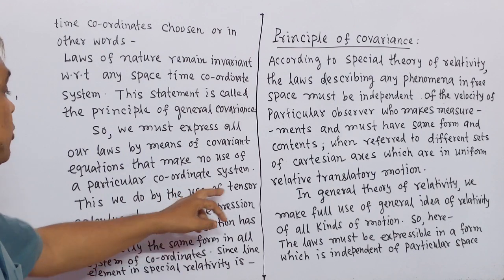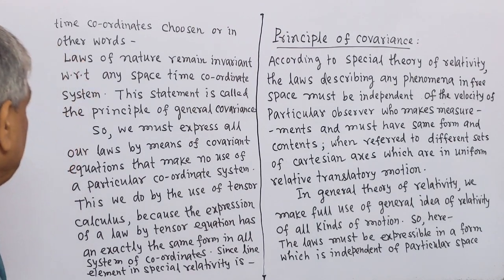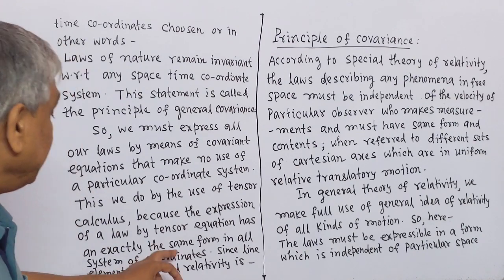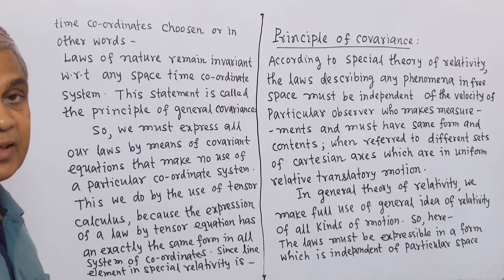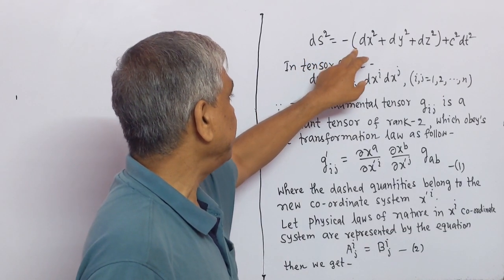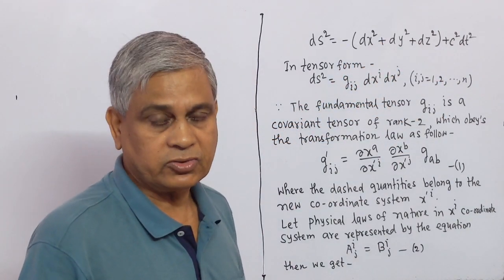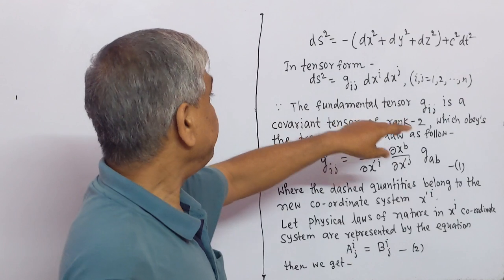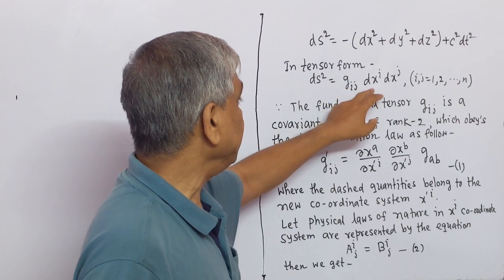This we do by the use of tensor calculus, because the expression of a law by a tensor equation has exactly the same form in all systems of coordinates. The line element in special relativity is ds² = −(dx² + dy² + dz²) + c²dt², where c is the velocity of light. In tensor form, the line element is expressed as ds² = gij dxⁱ dxʲ, where i, j = 1, 2, ..., n.